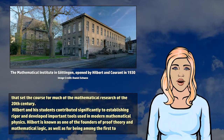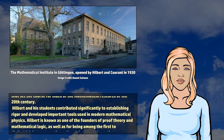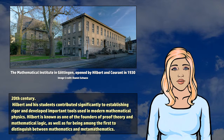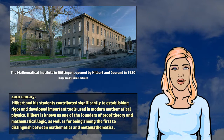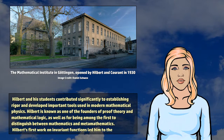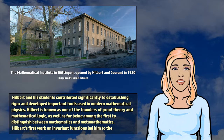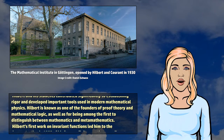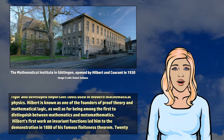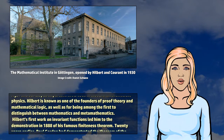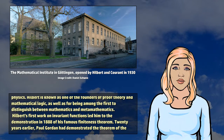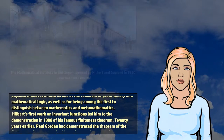Hilbert and his students contributed significantly to establishing rigor and developed important tools used in modern mathematical physics. Hilbert is known as one of the founders of proof theory and mathematical logic, as well as for being among the first to distinguish between mathematics and metamathematics.